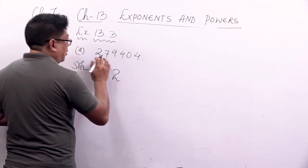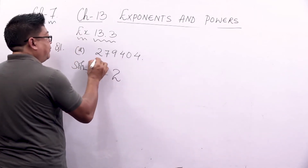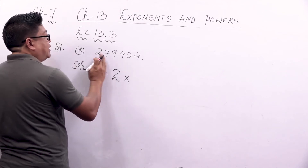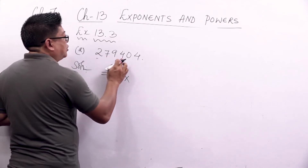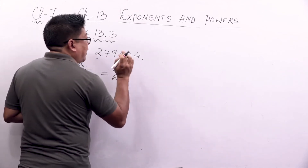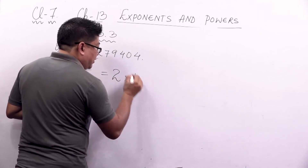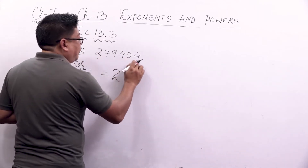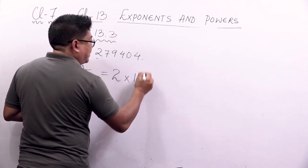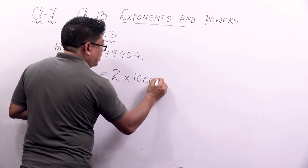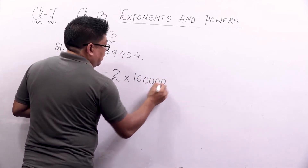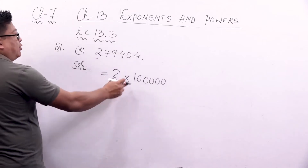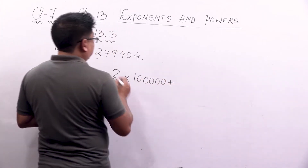Always start from the first digit. Take 2 — count the number of digits after 2: 1, 2, 3, 4, 5 — there are 5 digits. So we write 1 followed by 5 zeros. That gives 2 into 100000, plus the next digit which is 7. Take 7, count the digits after it: 1, 2, 3, 4 — so 7 into 10000 with 4 zeros.